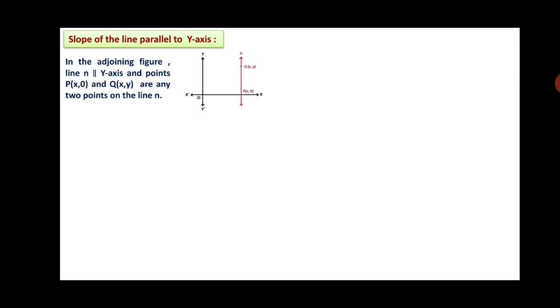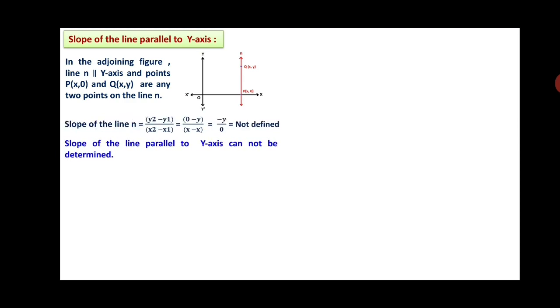Slope of the line parallel to the y-axis: line N (shown in red) is parallel to the y-axis, and points P(x, 0) and Q(x, y) are any two points on line N. Therefore slope of line N = (y2 − y1)/(x2 − x1) = (0 − y)/(x − x) = −y/0, which is not defined. Therefore the slope of a line parallel to the y-axis cannot be determined.